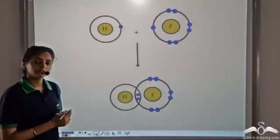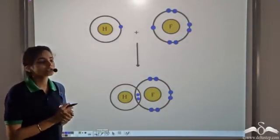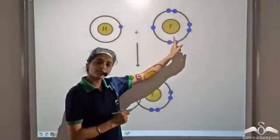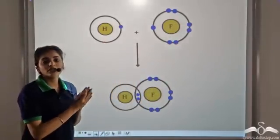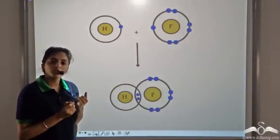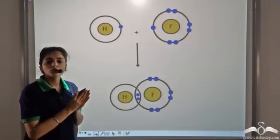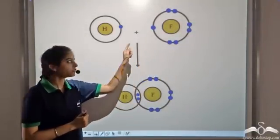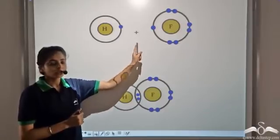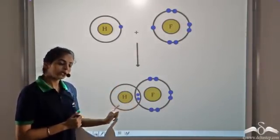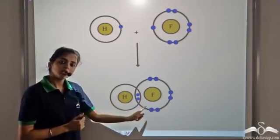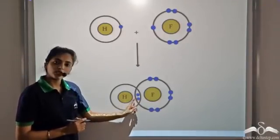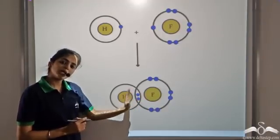Let's take an example. We have hydrogen combining with fluorine. Hydrogen has one valence electron and fluorine has seven valence electrons. We know hydrogen behaves like halogens, so the ionization potential, electron affinity, and electronegativity show the same trends as in the case of halogens. So they form a covalent compound. Both of them need one electron each, so they share one electron. By doing this, hydrogen has a duplet structure and fluorine has an octet structure. They are sharing two electrons.